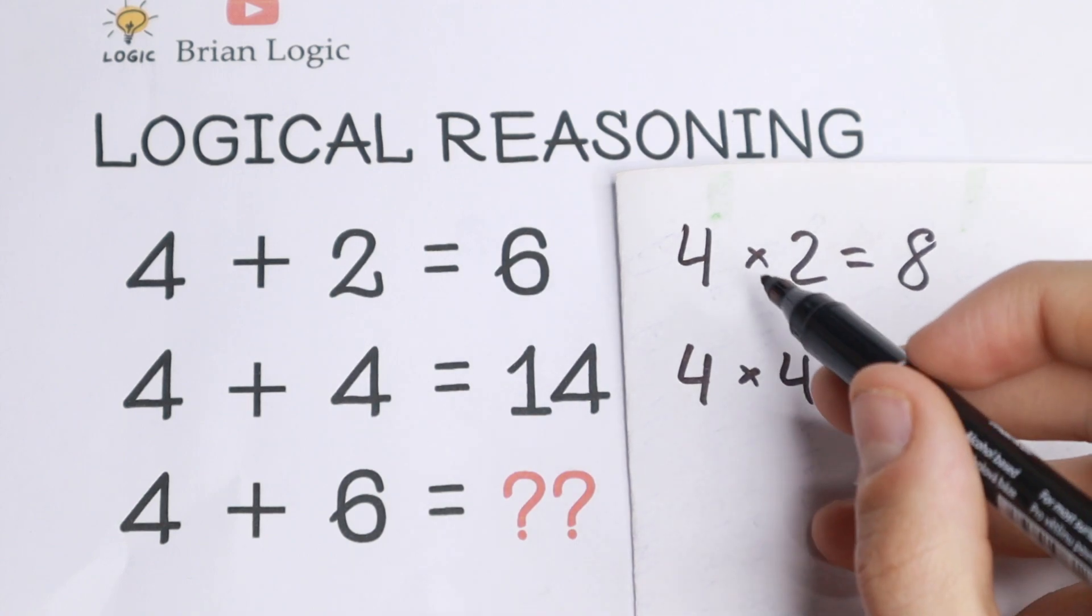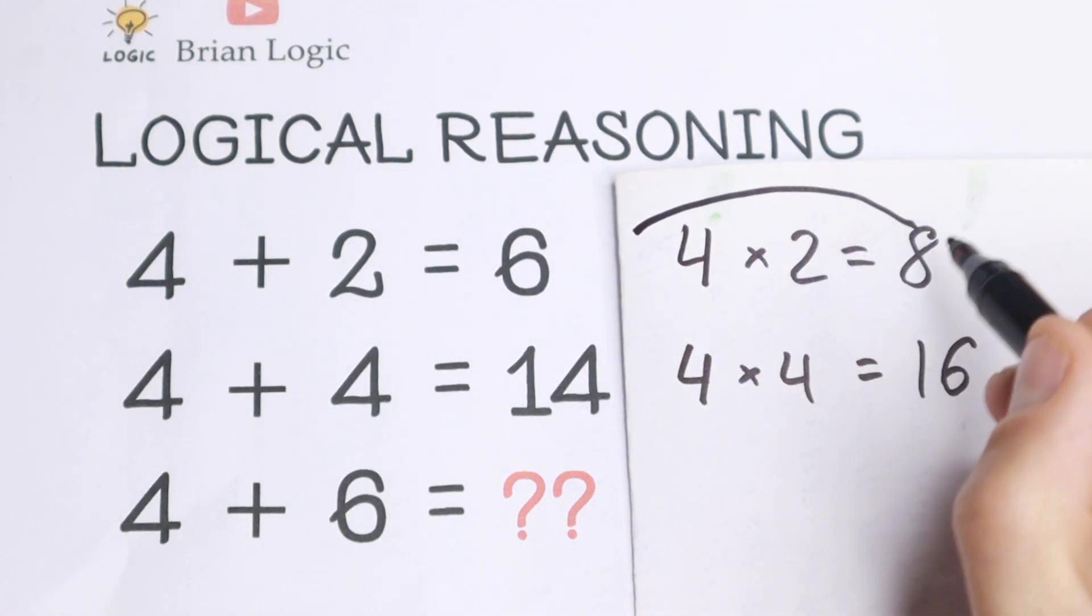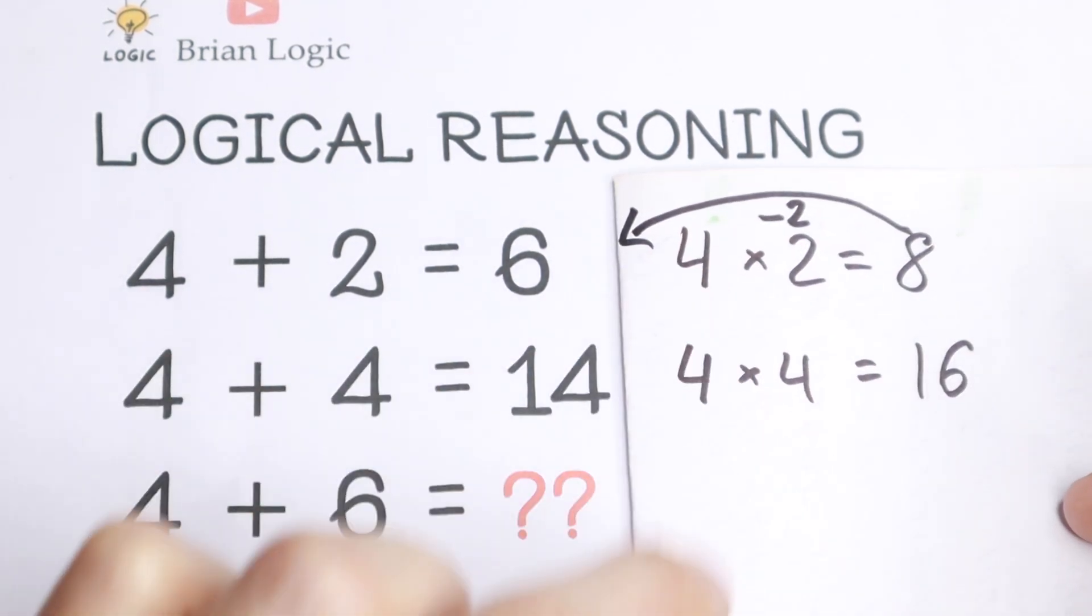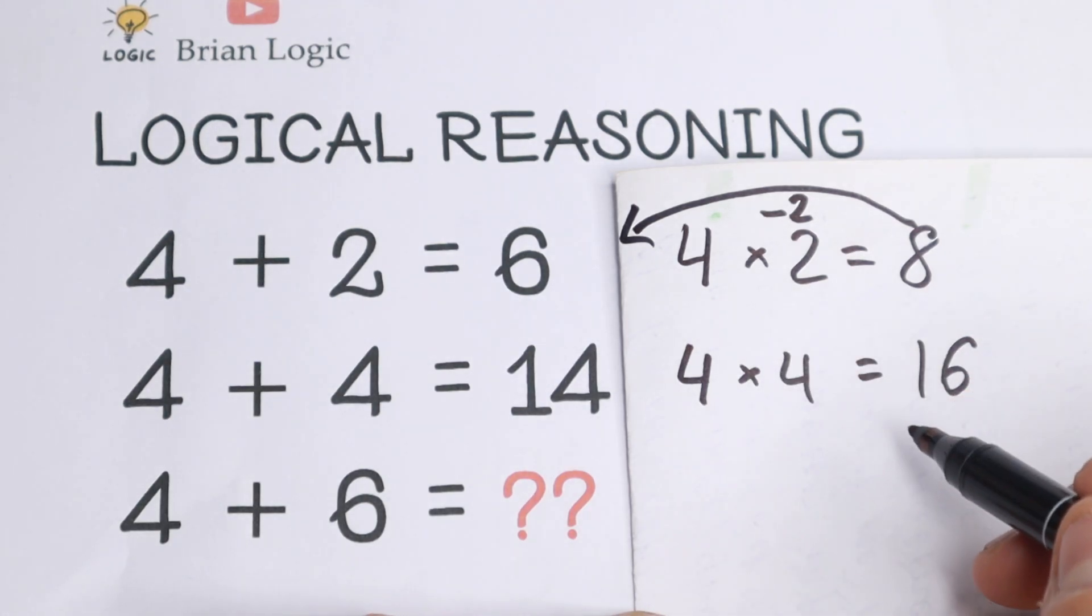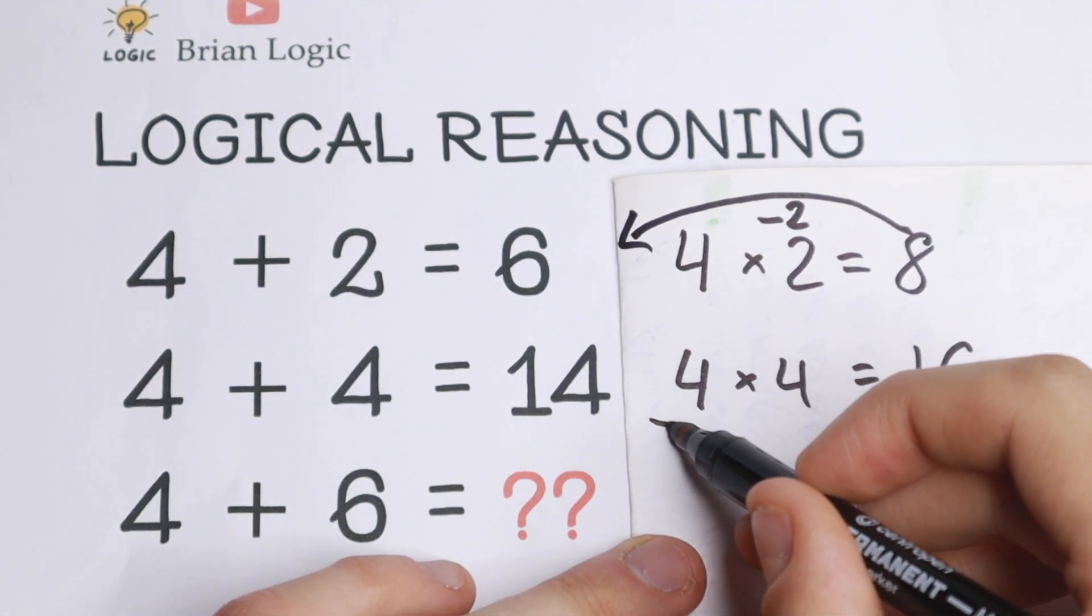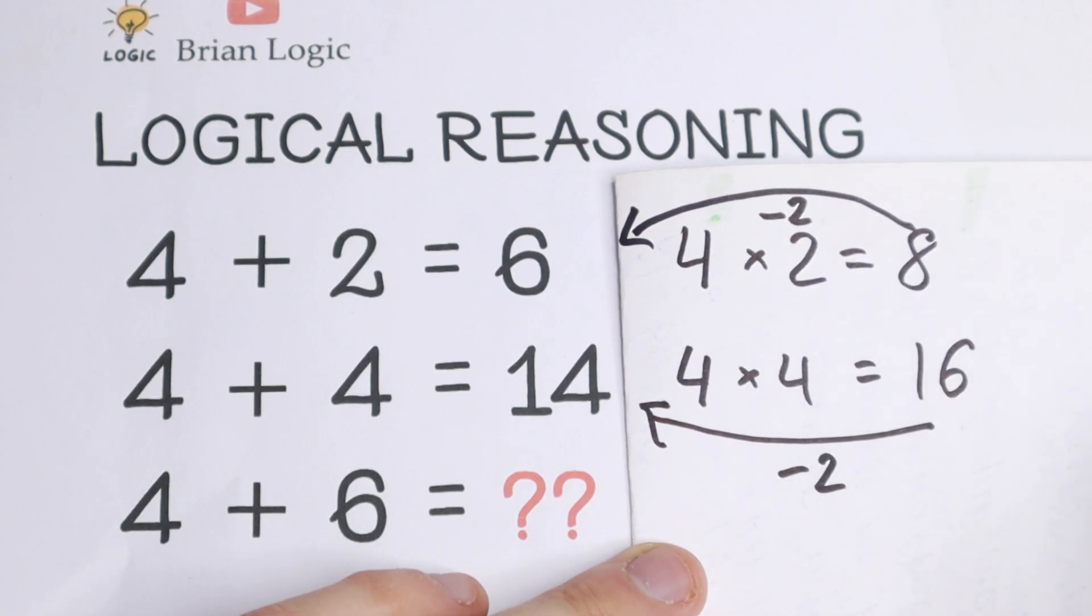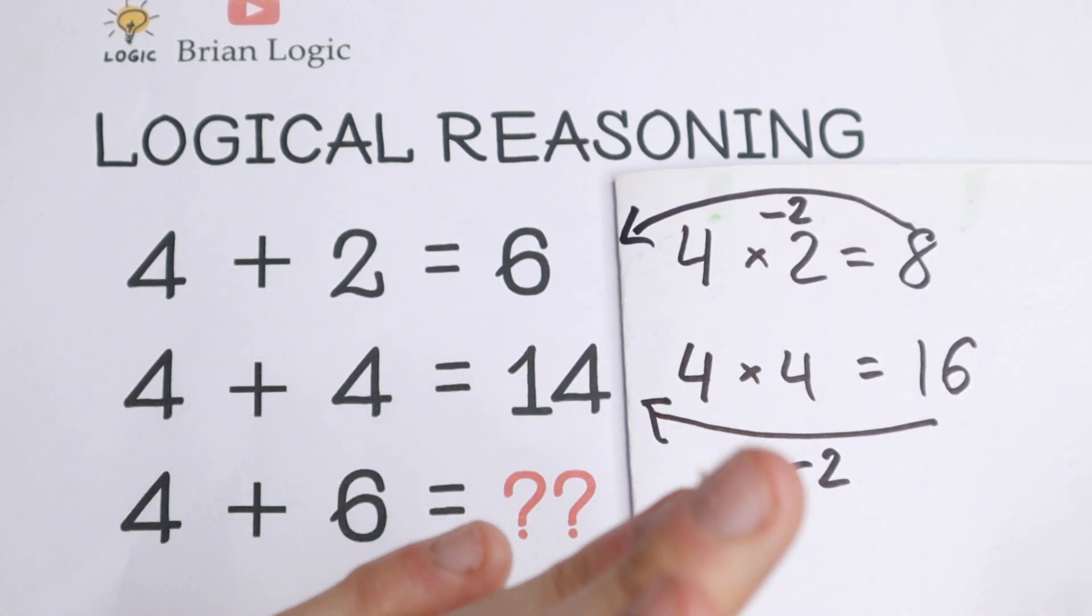I see right now that if we subtract from this 8, if we subtract 2, so right here minus 2, and right here, if we subtract from this 16, if we subtract 2 as well, minus 2, we will have a really interesting case. We will have a pattern.